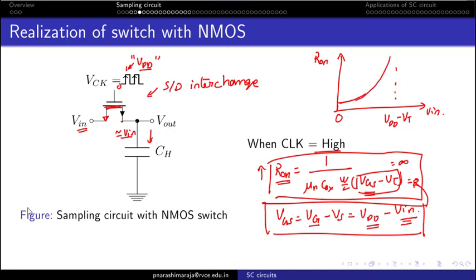Because RON is not constant — it is a function of VIN — it poses issues when we try to realize the switch with an NMOS transistor. Let us look at those drawbacks.